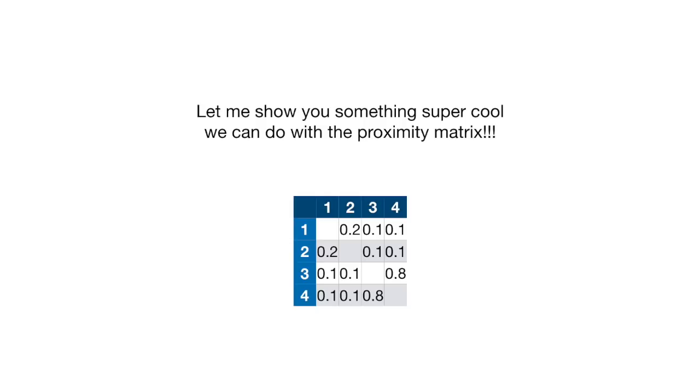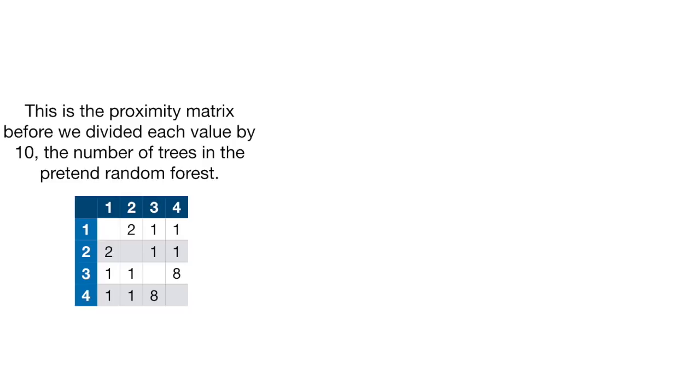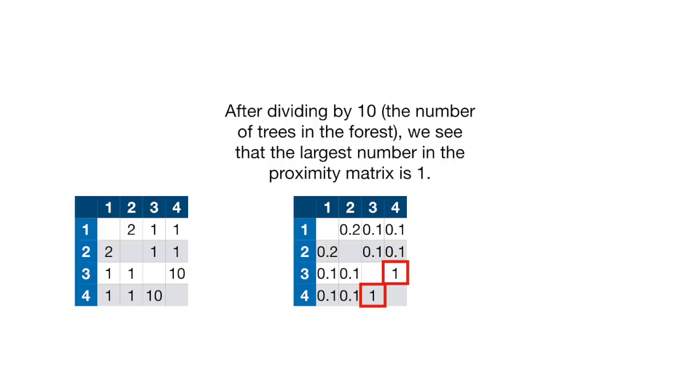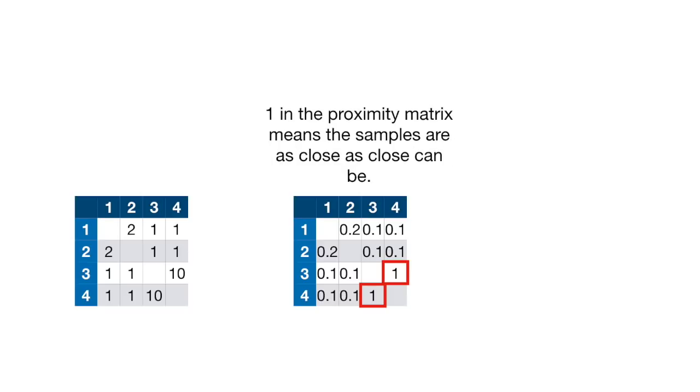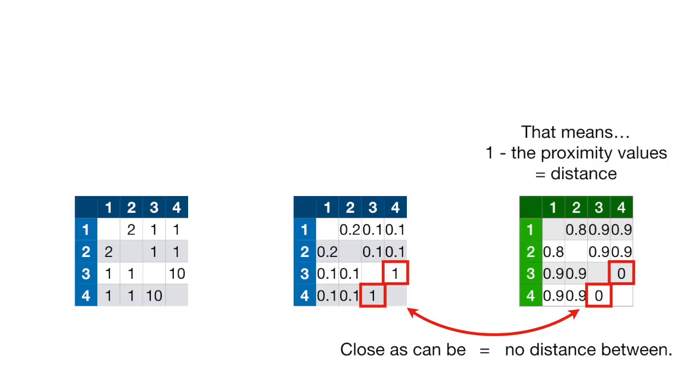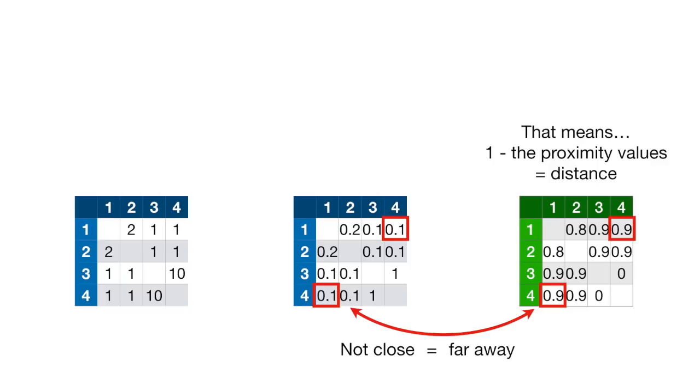Now it's time for an interlude of awesomeness! Let me show you something super cool we can do with the proximity matrix. This is the proximity matrix before we divided each value by 10, the number of trees in the pretend random forest. Just for the sake of easy math, imagine if samples 3 and 4 ended up in the same leaf node in all 10 trees. Now we have a 10 here and here. After dividing by 10, the number of trees in the forest, we see that the largest number in the proximity matrix is 1. 1 in the proximity matrix means the samples are as close as close can be. That means 1 minus the proximity values equals distance.